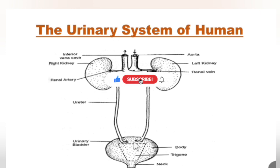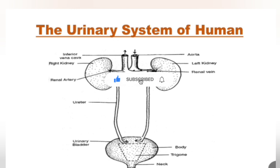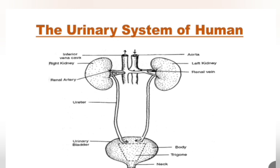The trigone has three holes — two holes from the two ureters. Then we have the neck part of the urinary bladder, followed by the urethra. The urine that comes to the urinary bladder is stored for a certain time period and after that it is excreted out of the body through the urethra, which is a narrow tube.